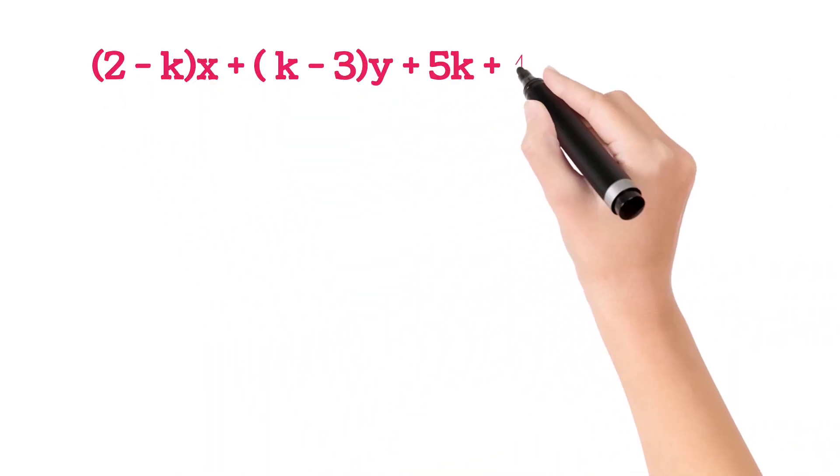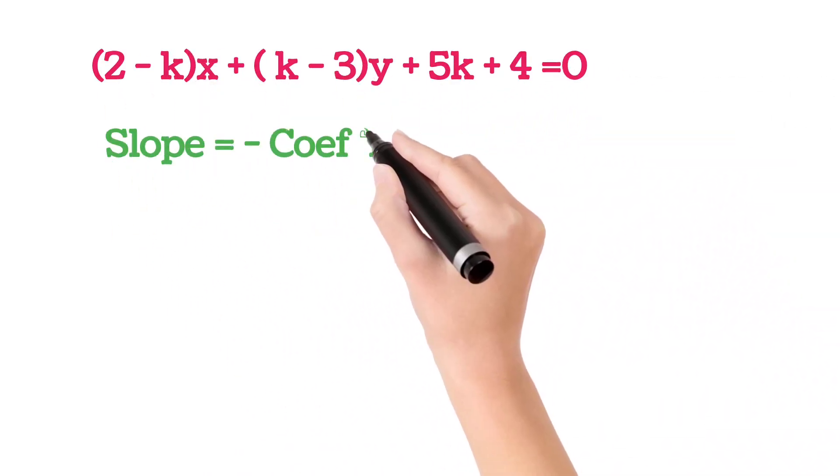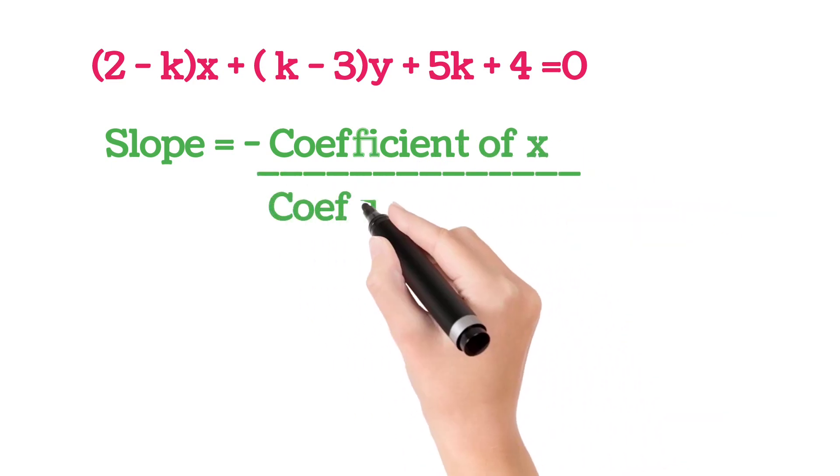Rewriting the previous equation. Formula for slope is minus coefficient of x divided by coefficient of y.